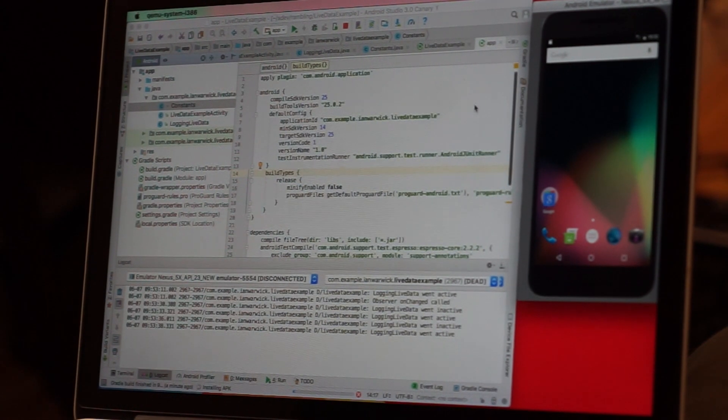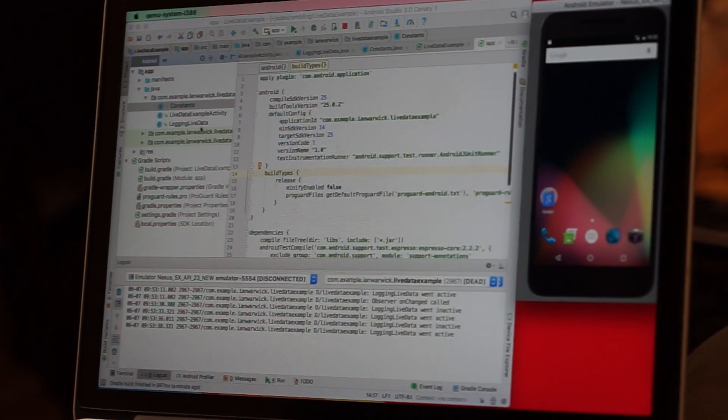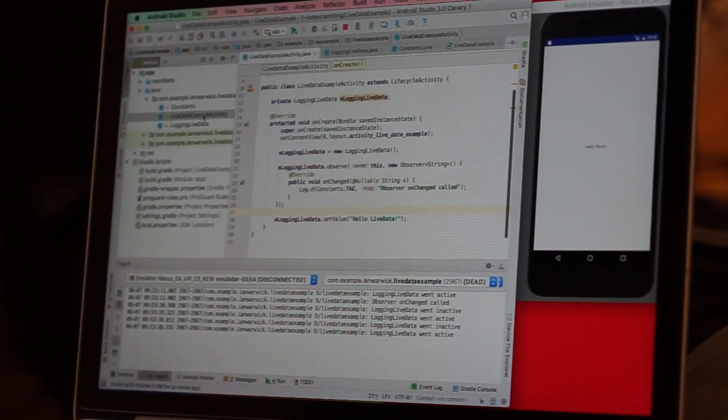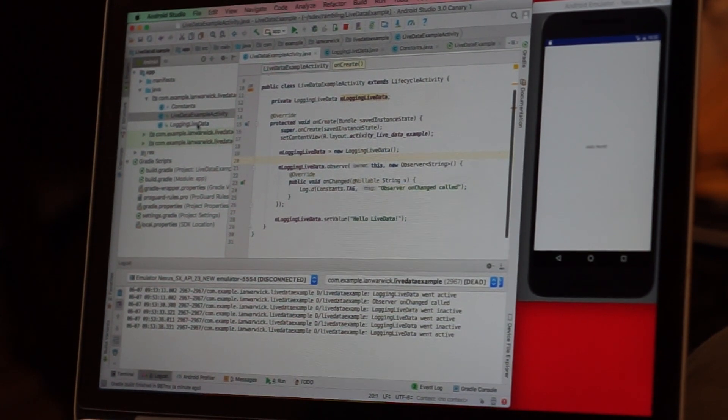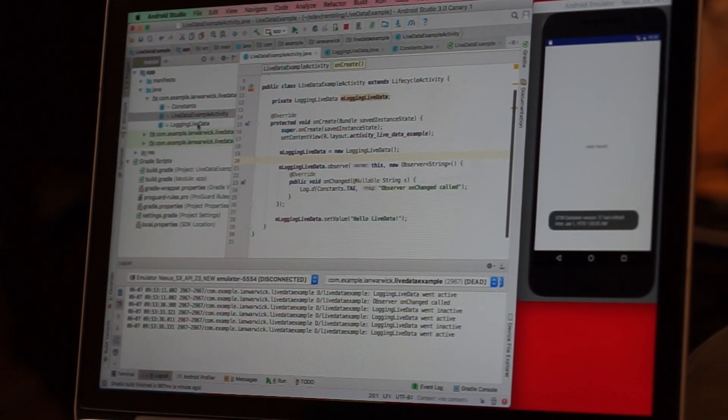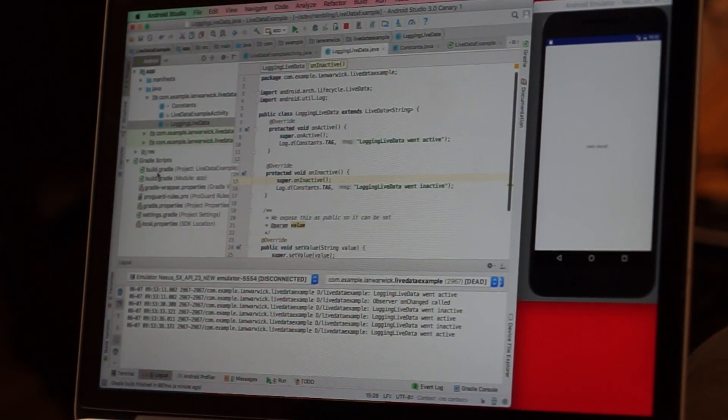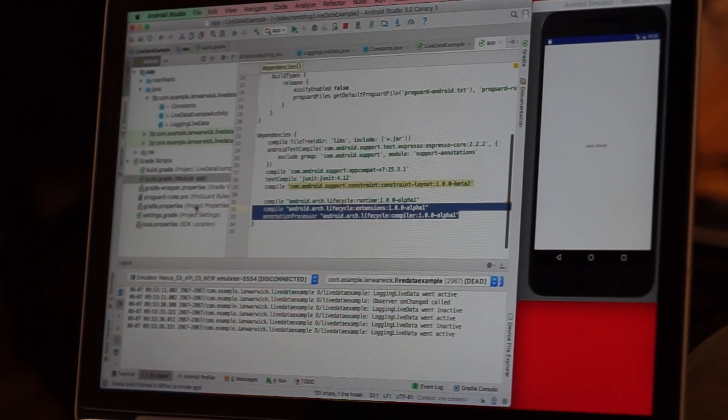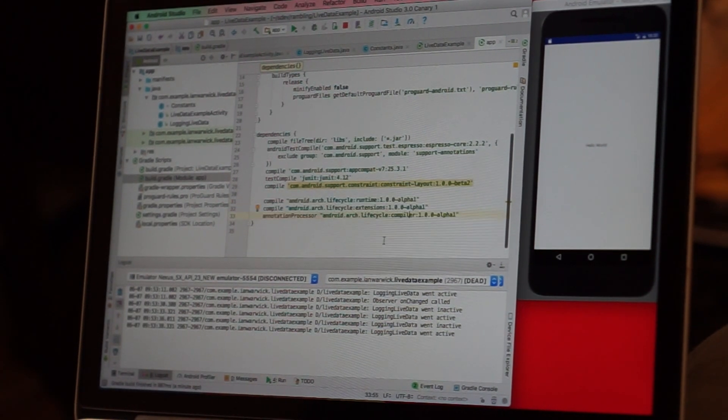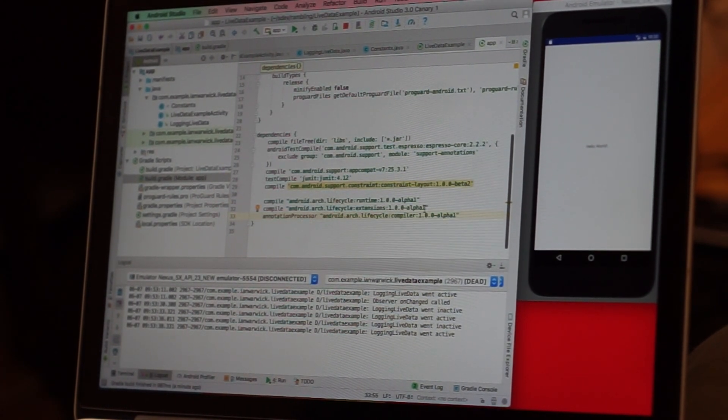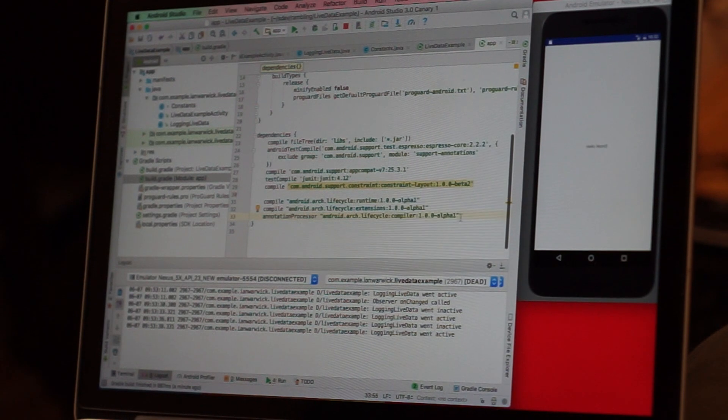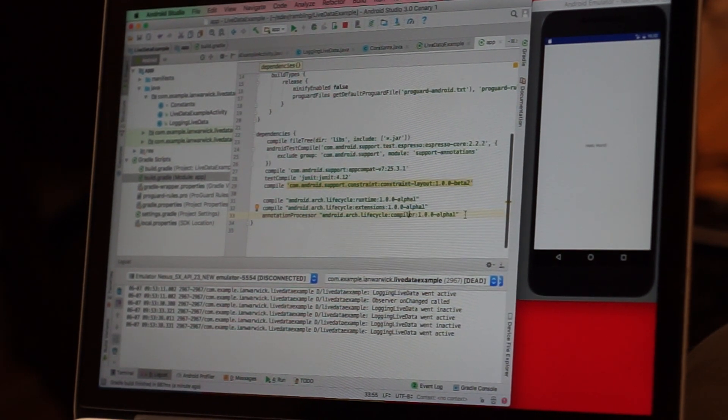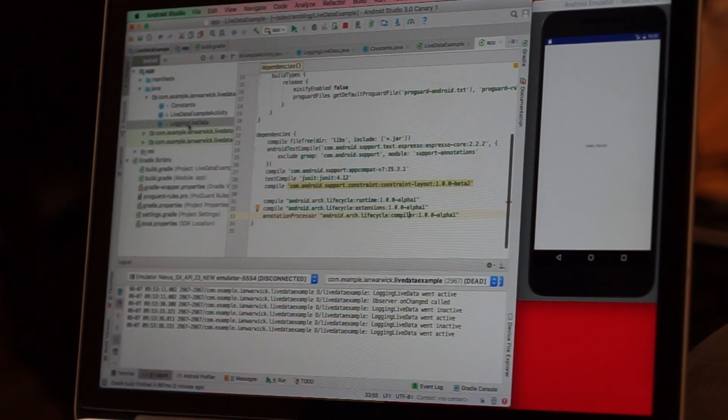I think the best thing to do is probably sit down and write up a code example. I've created a simple project in Android Studio 3 preview as a simple activity LiveData example activity. To use LiveData you need a couple of dependencies and an annotation processor dependency, which is the Android architecture lifecycle components 1.0.0-alpha1. This is very new stuff.